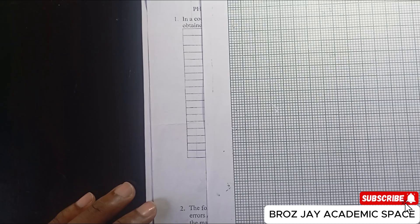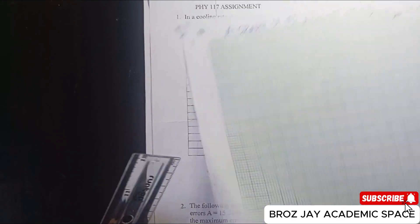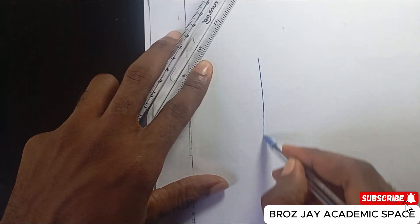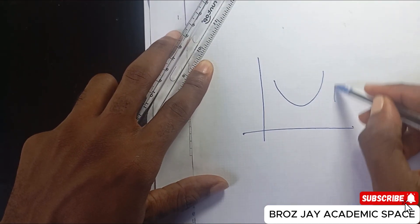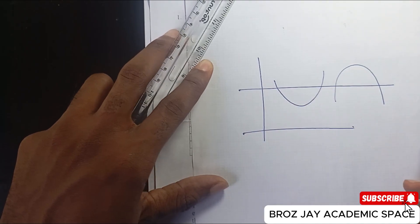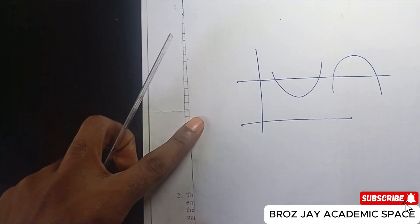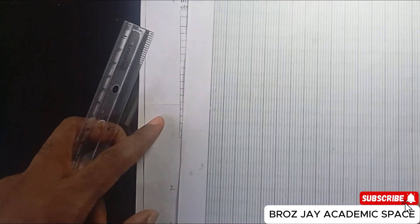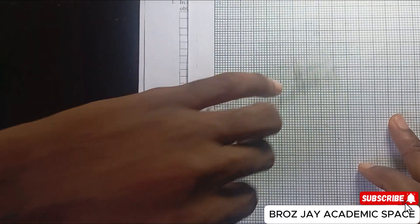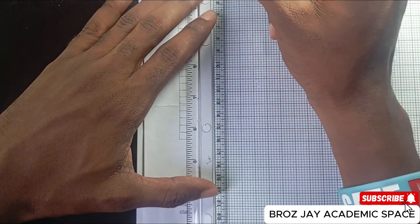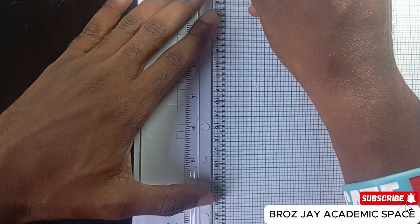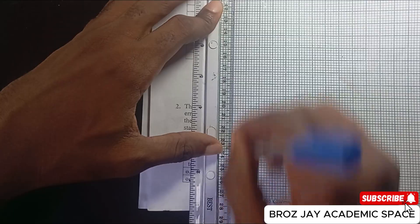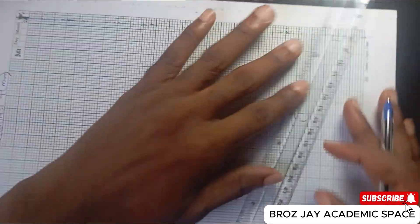What I mean is: we are given a temperature graph, and the nature of that graph will be like a parabola or hyperbola — it's a curve graph. It must not be straight, because temperature rises and falls. So it's a curve graph. Now let's rule our vertical axis and horizontal axis.